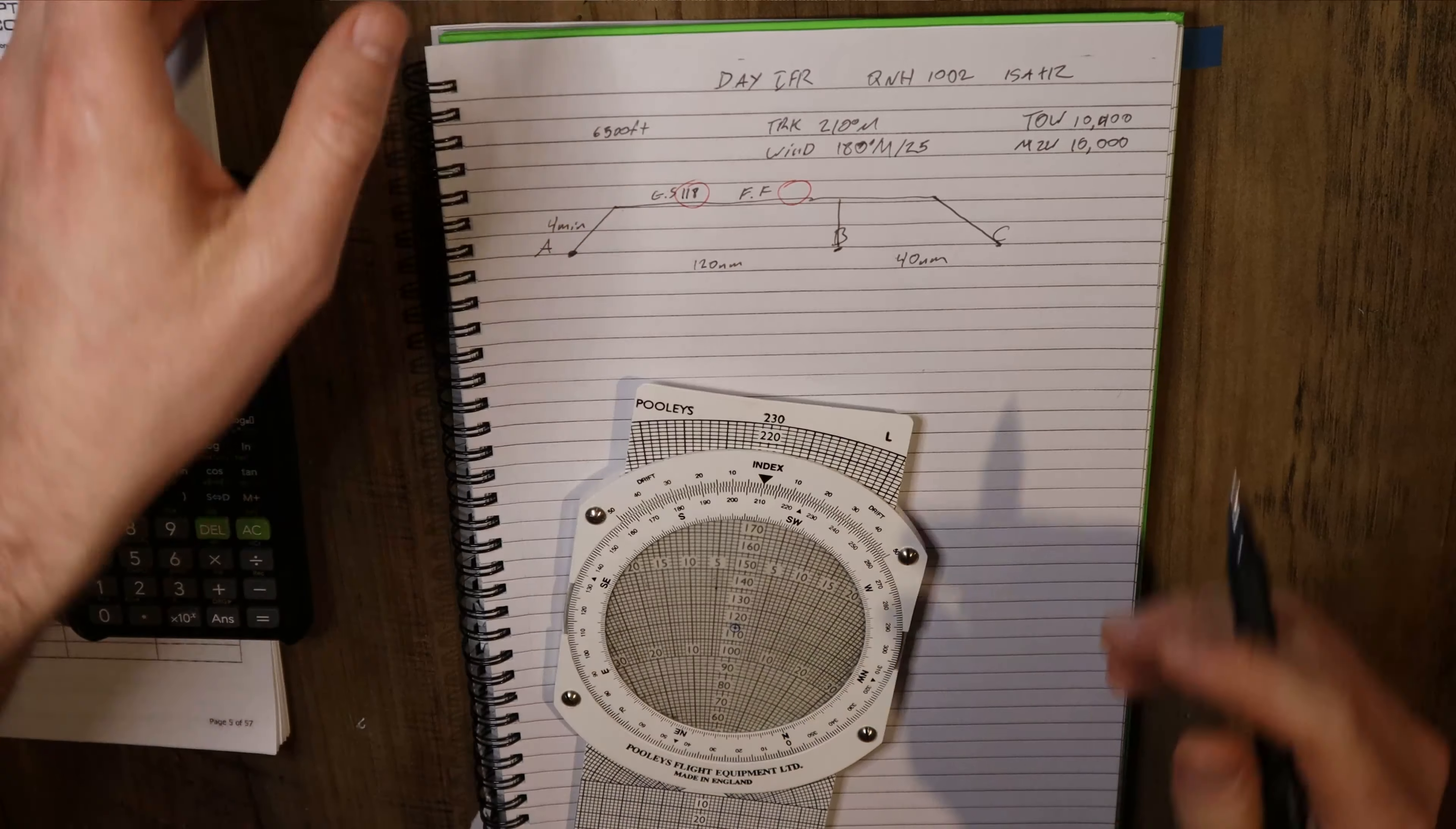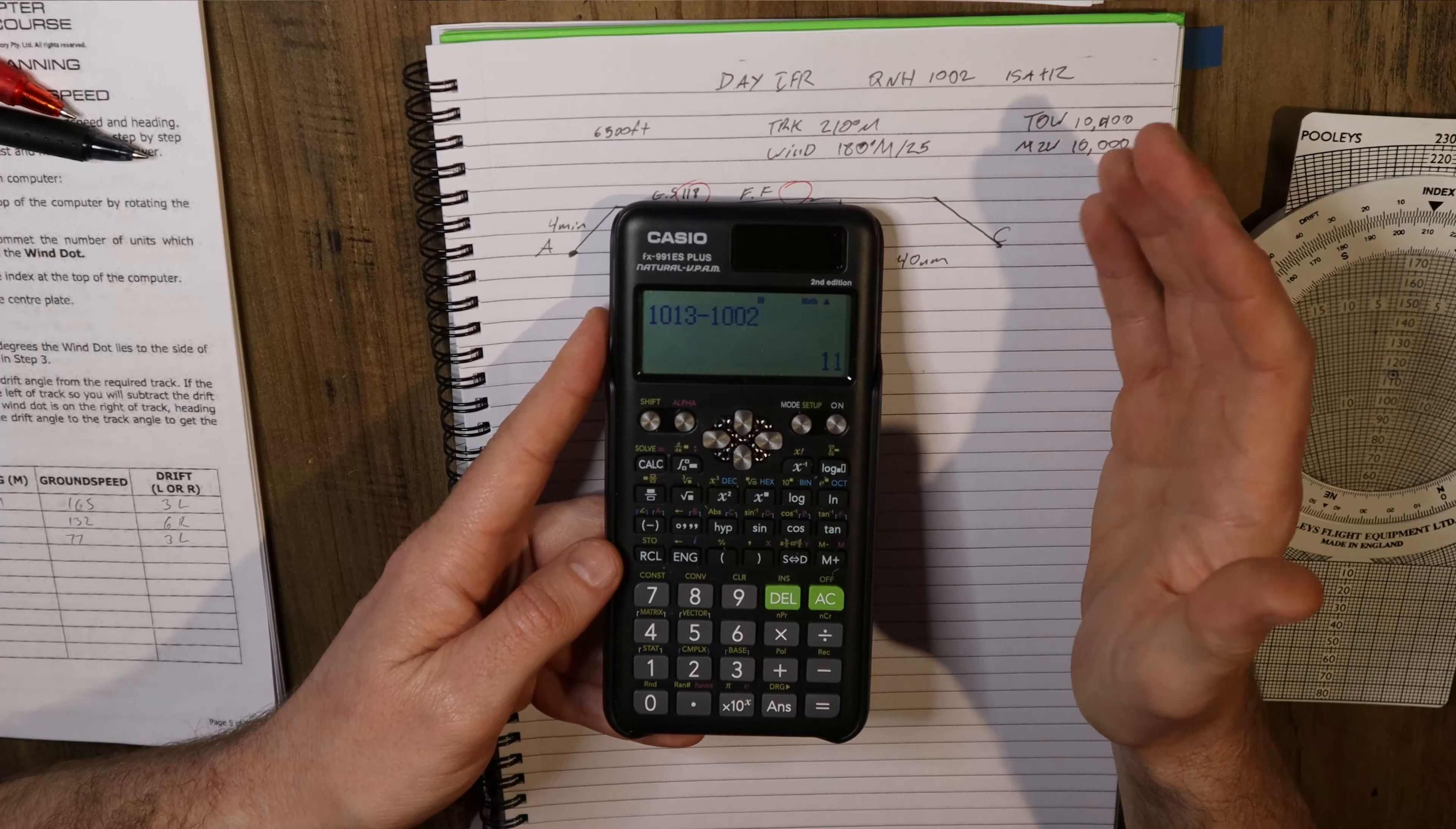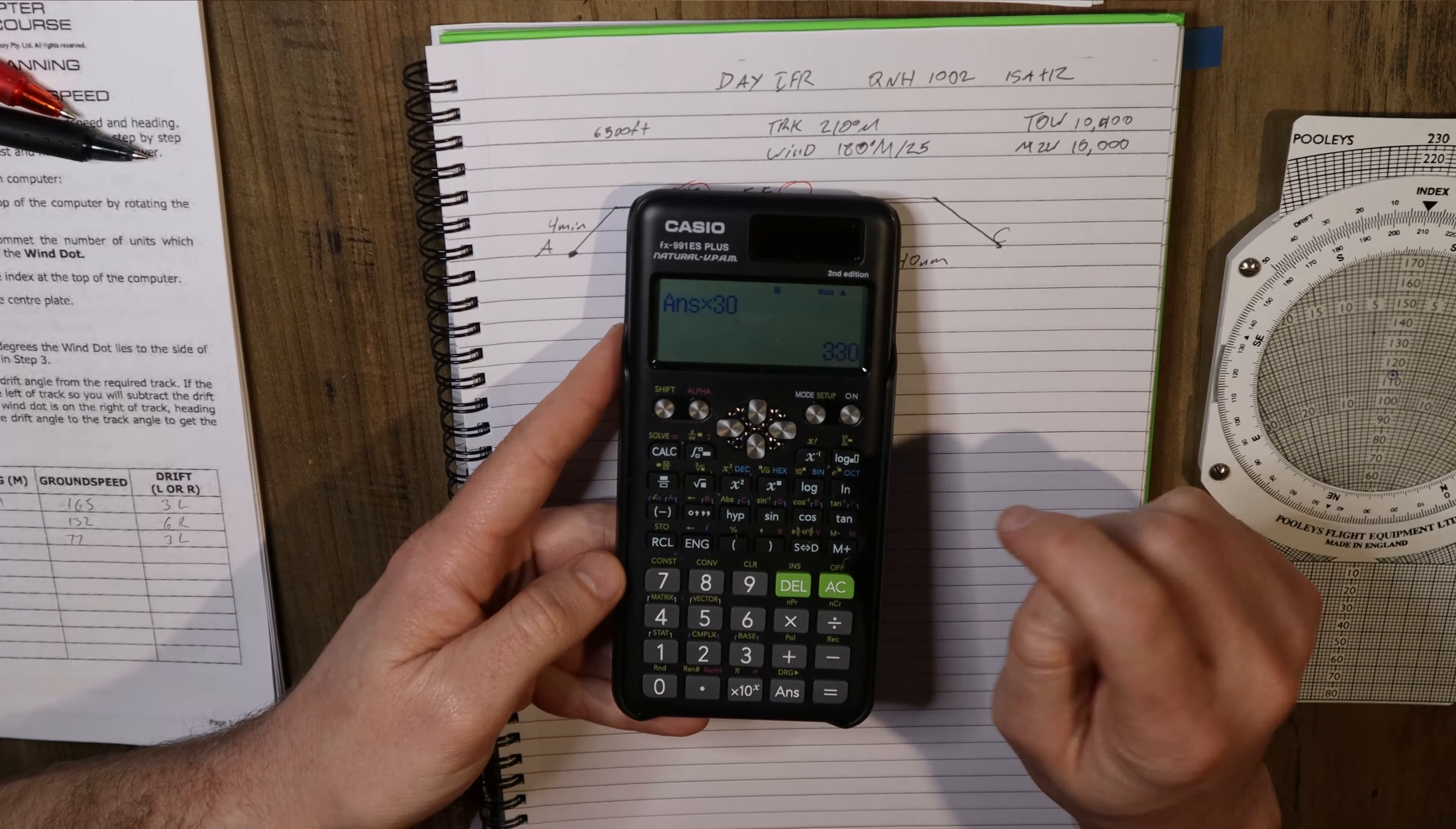The fuel flow - actually, sorry, we need to work out our DA. So 6500 feet QNH: 1013 minus 1002 gives us a difference of 11, so it's minus 11 on the QNH. Some people struggle with which way you go with adding or subtracting. I just always try to think about it logically. A lower pressure, so lower than 1013, we will find a lower pressure higher up, so it's worse for us. So it's going to add to our altitude. QNH difference, 1013 compared to 1002 is 11 times 30 feet, giving us 330 feet. We're going to add that to our 6500, so plus 330.